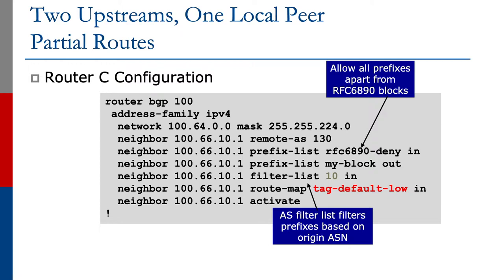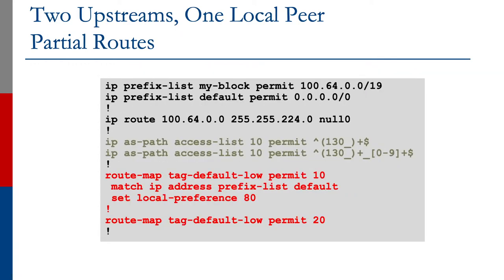We also have a route map tagged 'default low', which looks for the default route and tags it with a low local preference. The route map looks for the default and sets local preference to 80. The second line of the route map leaves all other prefixes alone. And you can see the AS path access list in the example here looks exactly the same as it did previously.